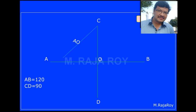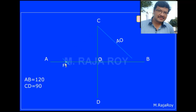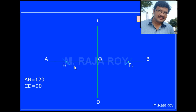To get F1, take AO as radius and C as center, then draw an arc onto the AB line. F1 can be obtained as shown. Now take the same AO radius with C as center and draw an arc onto the OB line. Then F2 is obtained. In this way, we can get focal points F1 and F2.